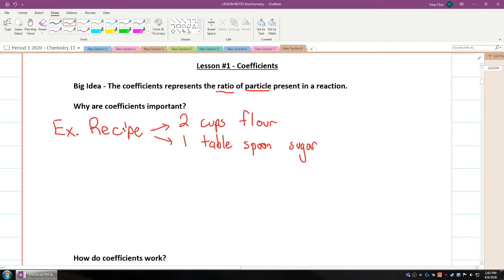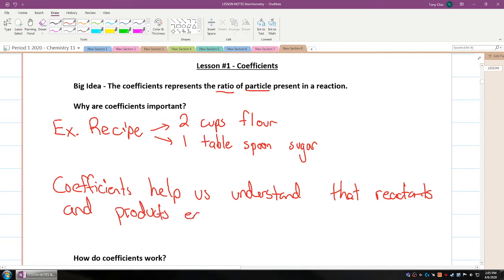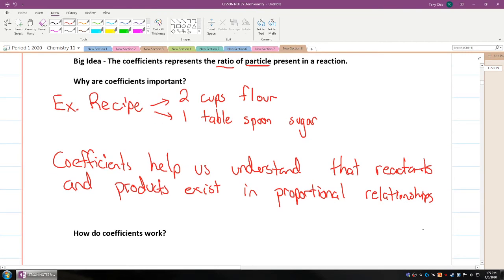Coefficients help us understand that reactants and products exist in proportional relationships. Really what it's talking about is how do you convert from a reactant to a product using the mole concept. So let's go into how coefficients work and we'll jump into some examples.